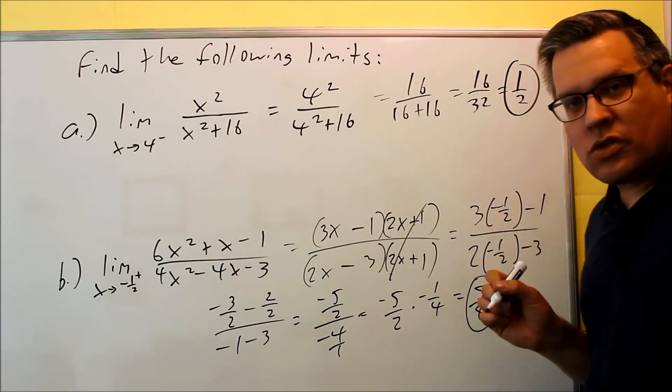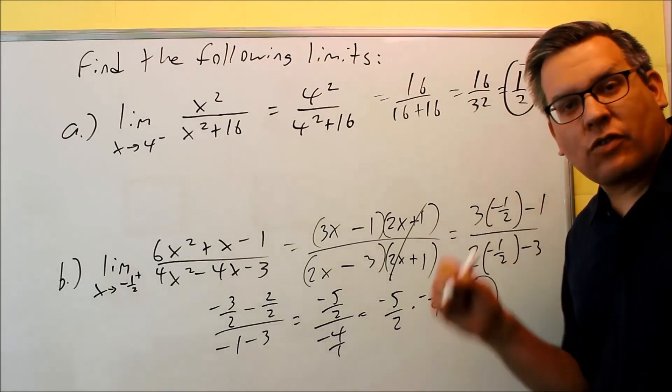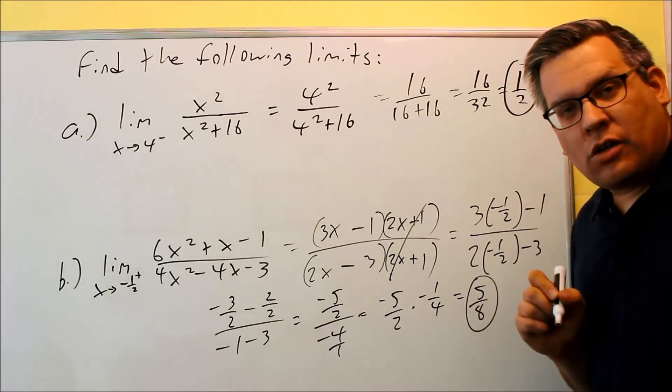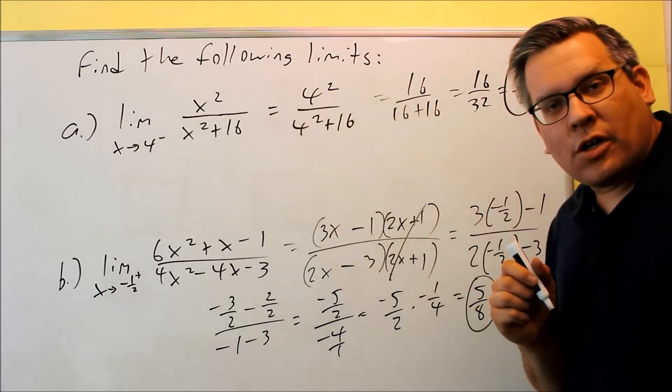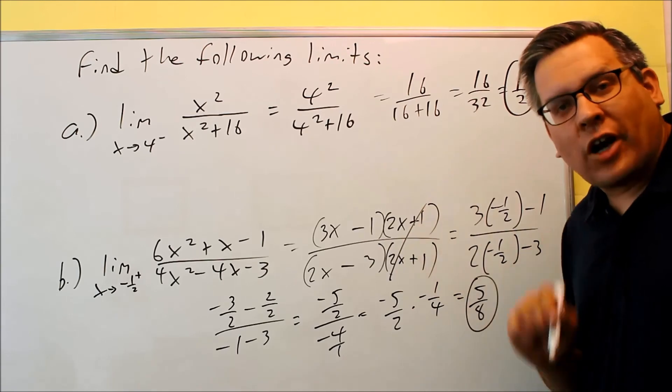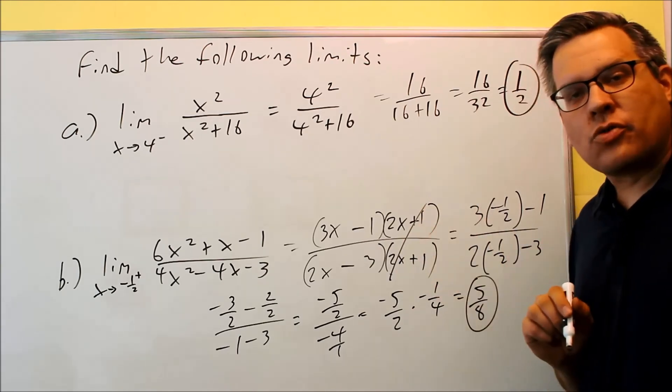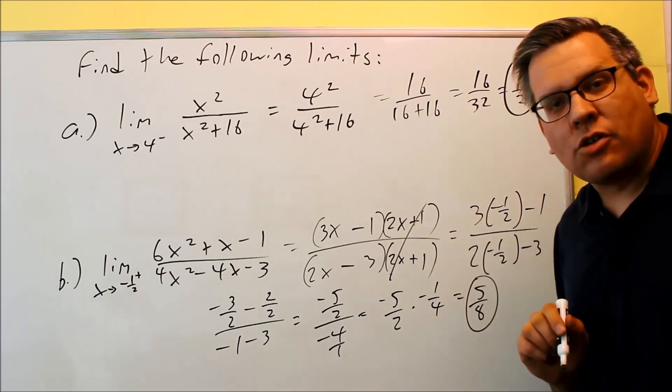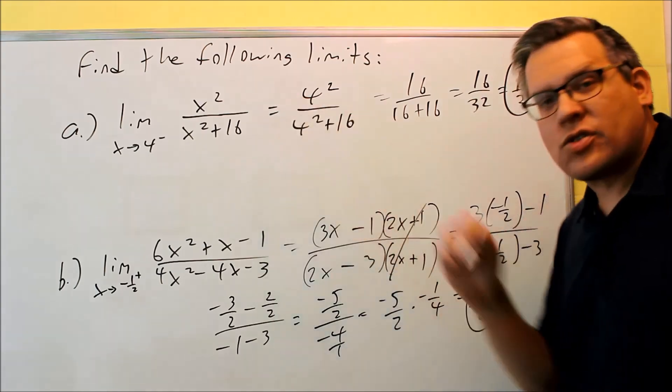Again, I did not have to use the test number. So the only time you have to use a test number is when you have a division by 0 happening, and the fraction is one where you can't algebraically simplify it any further. It's reduced as much as possible. That's the only time you've got to use a test number when you have one-sided limits.